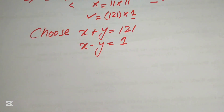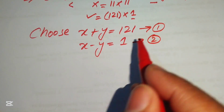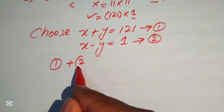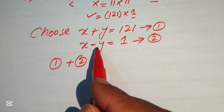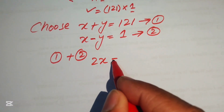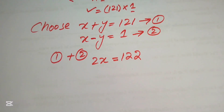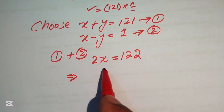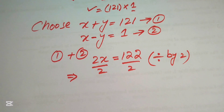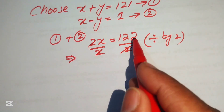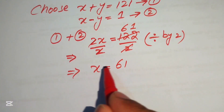We now solve these two linear equations. Equation 1: x plus y equals 121. Equation 2: x minus y equals 1. Adding both equations, the y terms cancel and we get 2x equals 122. Dividing both sides by 2 gives x equals 61. This is the value of x, which is the hypotenuse.